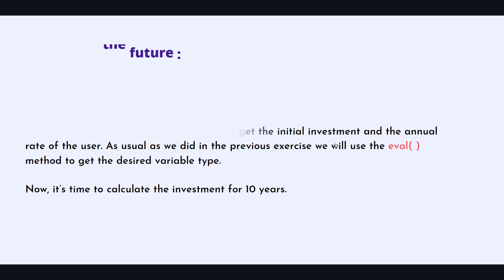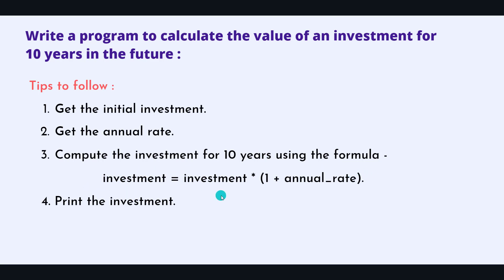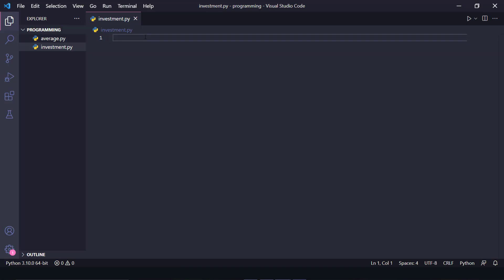Let's go through the steps to complete this exercise. First, get the initial investment. Second, get the annual rate. These two things are the inputs from the user. Then we compute the investment for 10 years using the formula: investment = investment * (1 + annual_rate). You just substitute those values into the formula and print the result — that's pretty straightforward.